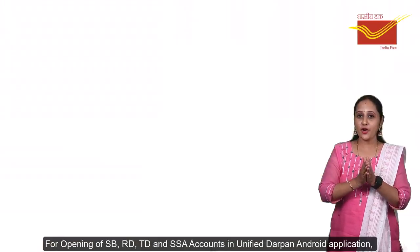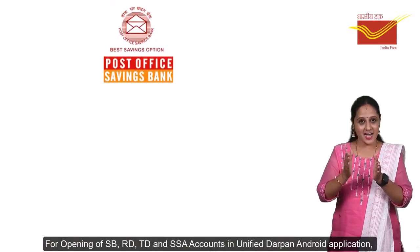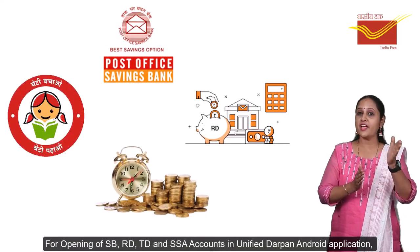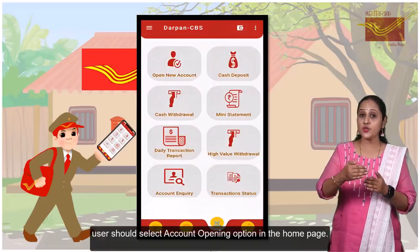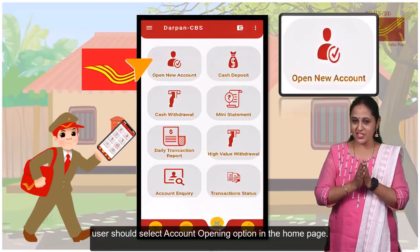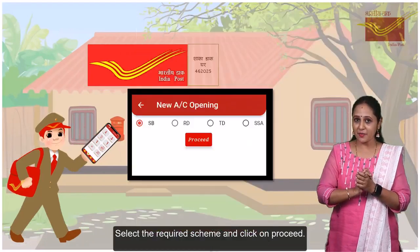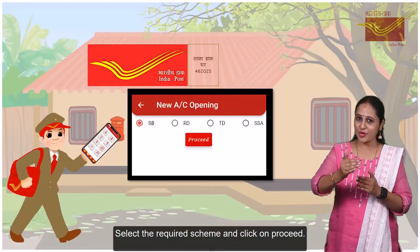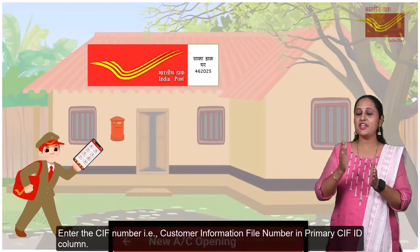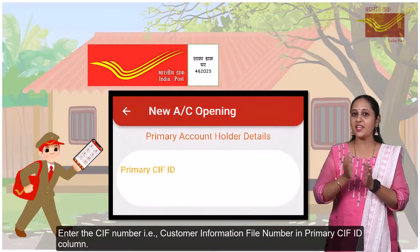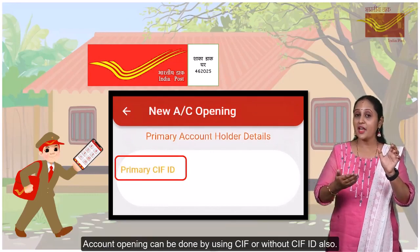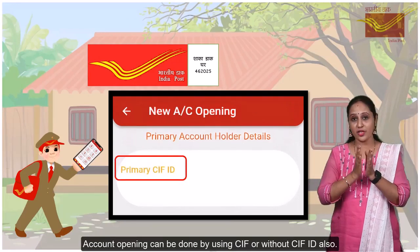For opening of SB, RD, TV, and SJ accounts in the Unified Android application, the user should select the account opening option on the home page, select the required scheme, and click on Proceed. Enter the CIFF number — that is, the Customer Information File number — in the primary CIFF ID column. Account opening can be done by using a CIFF ID or without a CIFF ID.